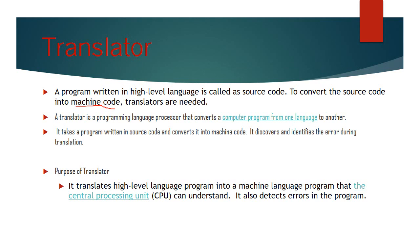In computer language, we use a translator to convert our program into machine-understandable code. That is the role of the translator. We can also perform error detection using the translator.